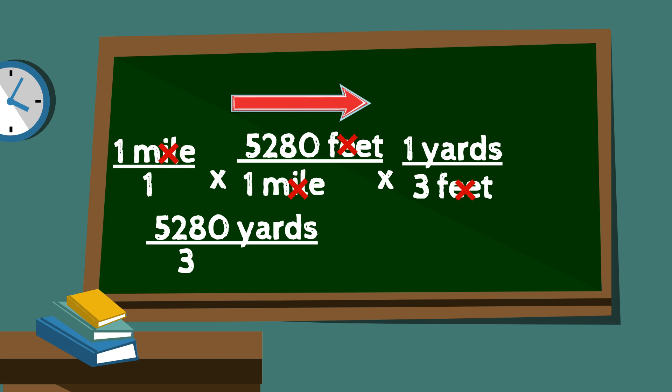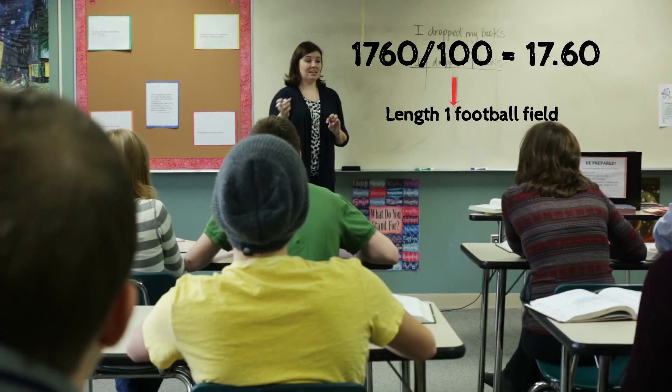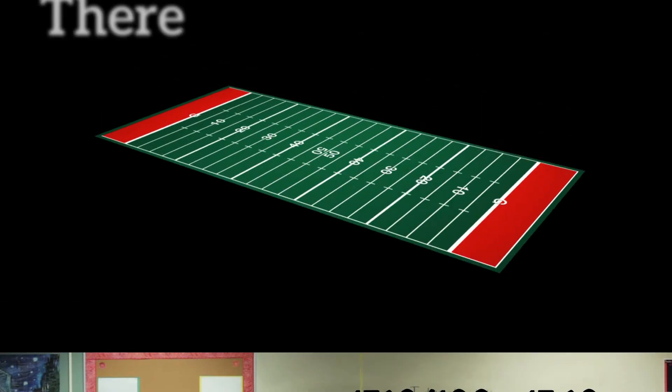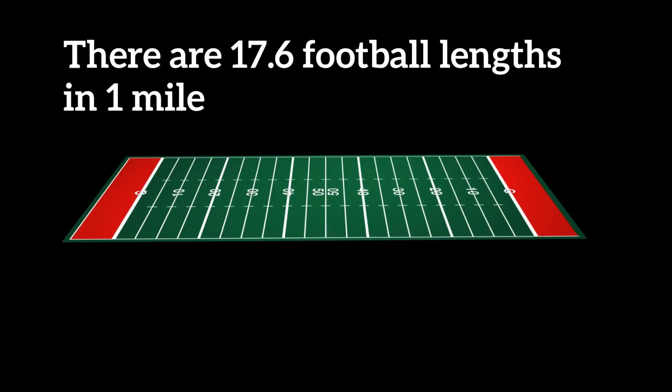I will divide 5,280 by 3 because I want to know how many yards are in 1 mile and I don't want to leave it as a fraction. 5,280 divided by 3 equals 1,760 yards in 1 mile. Now I divide by the length of 1 football field, which is 100, and that equals 17.6 — so there are 17.6 football fields in 1 mile.